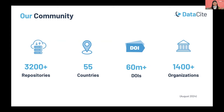DataSite provides the infrastructure to make research openly available, but it's our community of members who use that infrastructure to register DOIs and metadata for their scientific productions. Currently, we have more than 1,400 organizations across 55 countries that have connected their repositories or systems to the DataSite registry, and to date our members have registered more than 60 million DOIs.